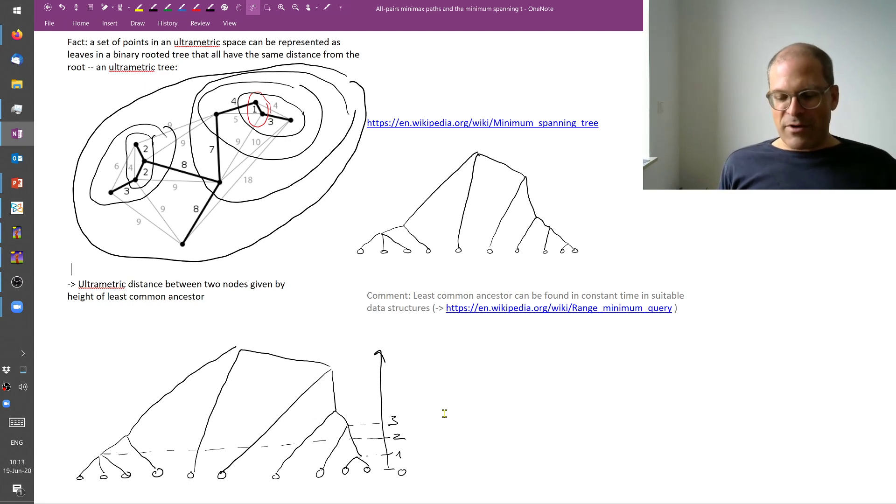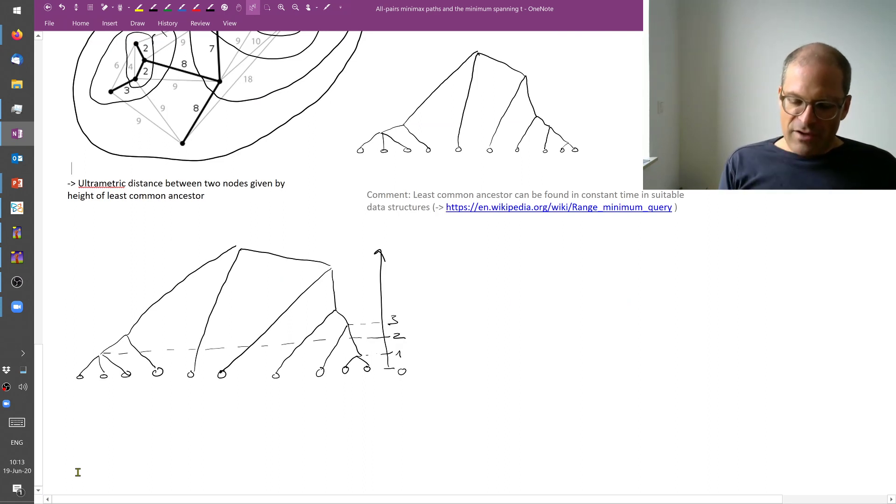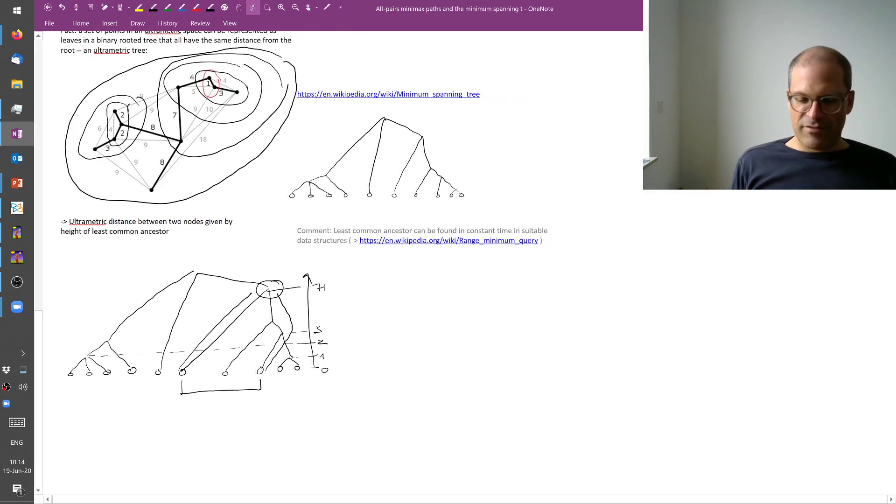Now, one nice thing about such an ultrametric tree is that after suitable pre-processing, if I want to find out what's the distance between any two nodes, for example, what's the minimax distance between these two? Well, then I have to walk up and I have to walk up until I find the least common ancestor, which would be this one. And then I can read off the height of this least common ancestor. And by use of clever data structures, turns out that you will be able to do this in constant time. So not even logarithmic, walking up the tree or something, but really in constant time. Very nice.